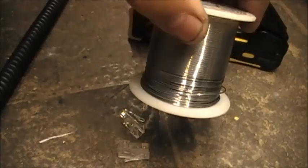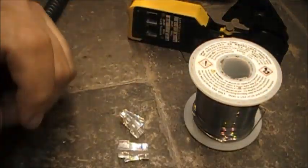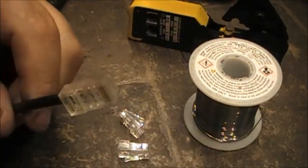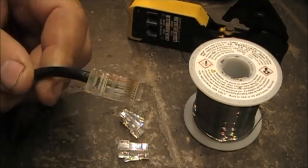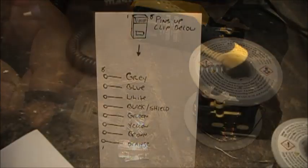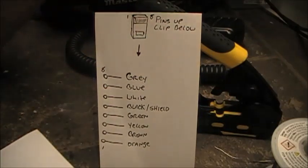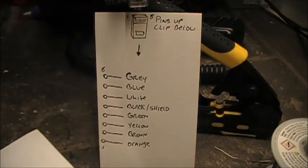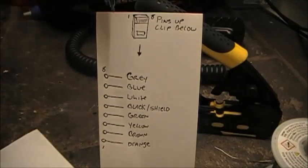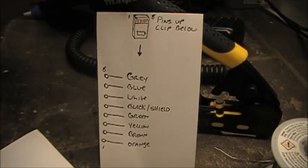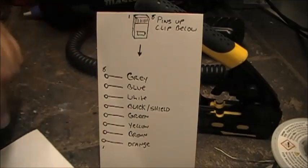First thing I got to do, believe it or not, we are going to use solder. It's just gonna make installing the wires so much easier. I'm gonna chop off the connector here and see what the wiring code is for this old plug. So this is with the clip, the plug facing up, pins facing you. We got gray, blue, white, black slash shield, green, yellow, brown, and orange. That's the color code for the Icon HM-152 microphone.